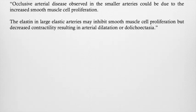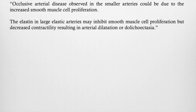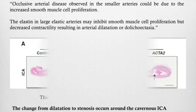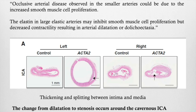Why do we have this transition from dilatation to occlusion and straightening? The occlusive arterial disease is observed in the smaller arteries and is probably due to smooth muscle cell proliferation, while the elastin, which is present and abundant in the large arteries, may inhibit the muscle cell proliferation, resulting in arterial dilatation. The change from dilatation to stenosis occurs around the cavernous ICA, when the external elastic lamina disappears histologically.